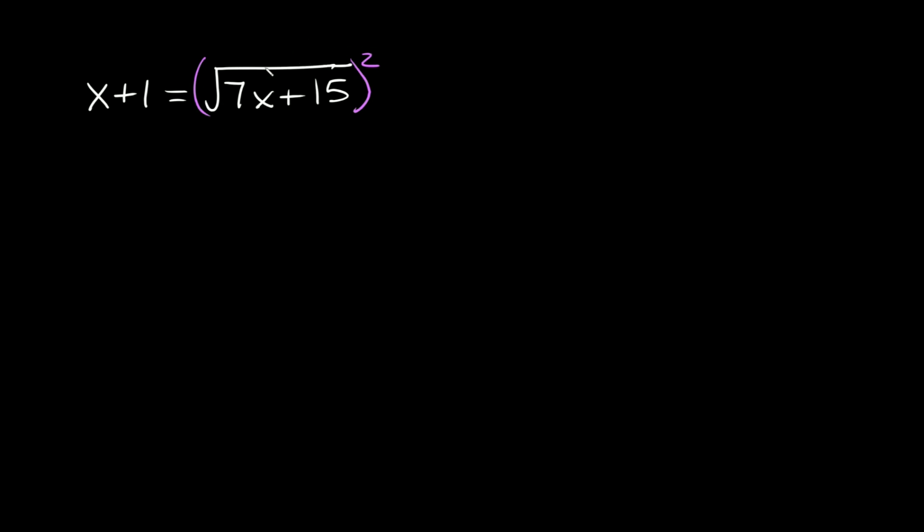And again, whatever we do to one side of an equation, we have to do to the other. So we'll raise this whole side to the second power also. So then on this side, the square root and the squared exponent cancel out. So then we're just left with what's inside of the radical. So we're left with 7x plus 15, and that's equal to this side over here, which is x plus 1 squared.